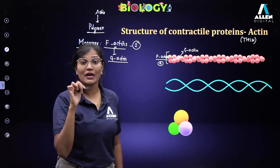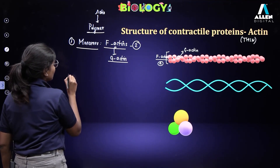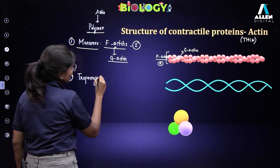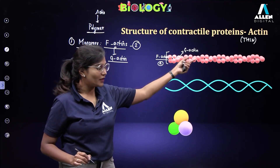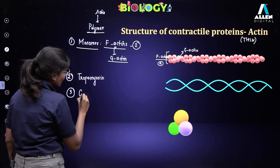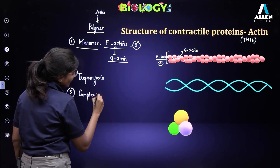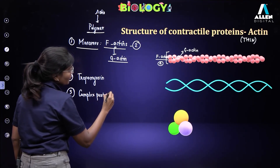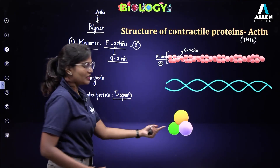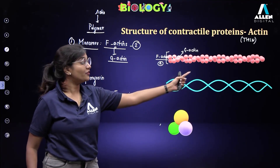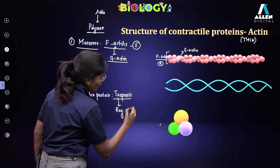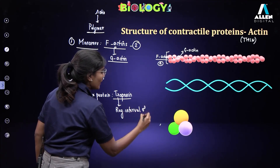The second type of filamentous protein is tropomyosin. Tropomyosin will bind to the actin, specifically the F-actin. The third one is called a complex protein — troponin. Troponins will be present at regular intervals of tropomyosin.